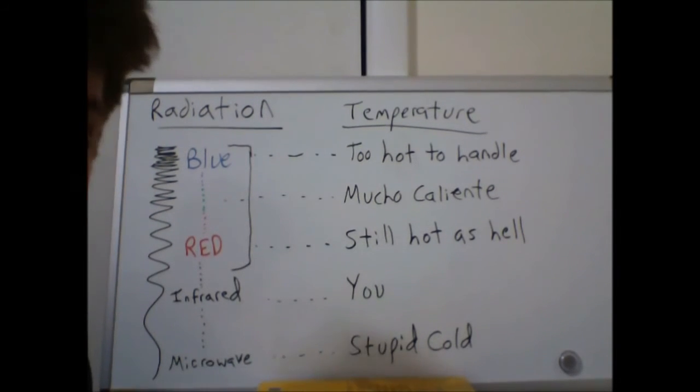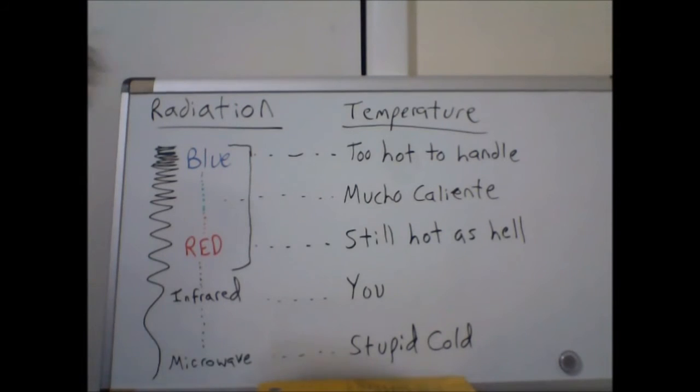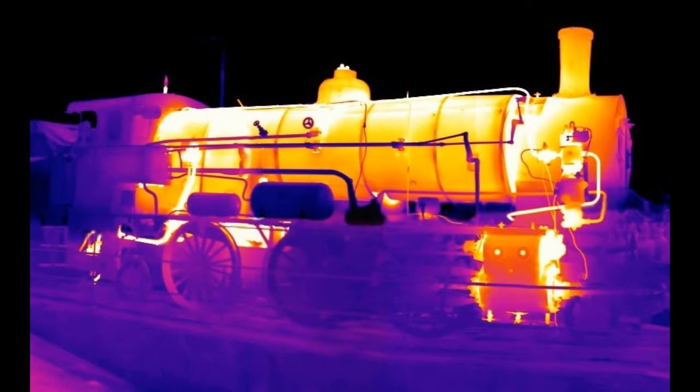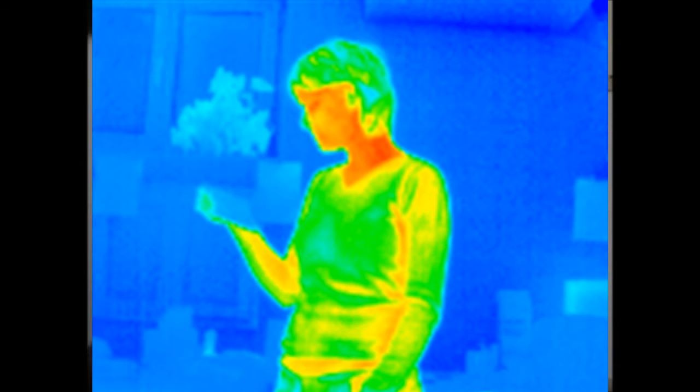Objects cooler than this still radiate, but the radiation is in the infrared range. We can't see it with our own eyes. However, if you have a thermal camera, what these devices do is they'll actually pick up on the infrared radiation that objects in their field of view emit, and it will create an image by converting these infrared frequencies into colors that we could see.